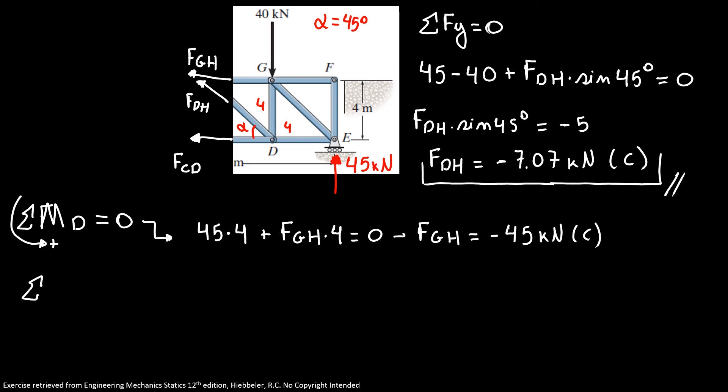So I'm going to use the sum of forces in X direction equals zero. Now I have minus FGH minus FDH cosine of 45 degrees plus FCD equals zero. So my FCD is equal to minus 45 kilonewtons minus minus 5 kilonewtons, because sine of 45 is the same as cosine of 45 degrees.